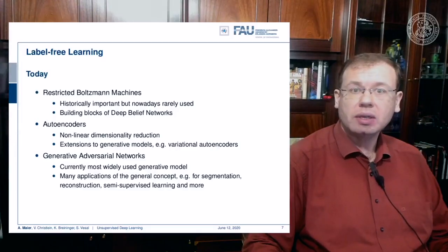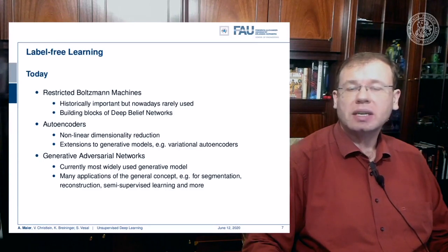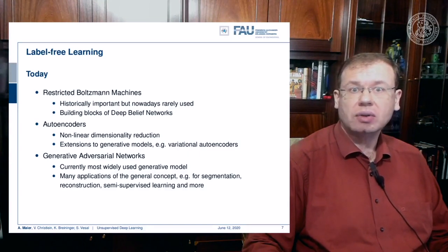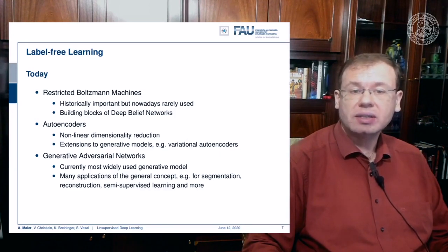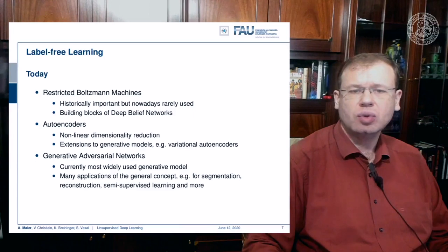Later we'll talk about autoencoders, which is an emerging technology and kind of similar to the restricted Boltzmann machines, but you can use this in a feedforward network context for nonlinear dimensionality reduction. You can even extend this to generative models like the variational autoencoders, which is also a pretty cool trick. And then lastly we will talk about generative adversarial networks, which is currently probably the most widely used generative model with many applications including image segmentation, reconstruction, and semi-supervised learning.